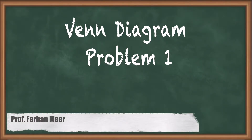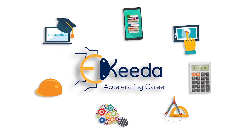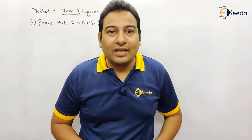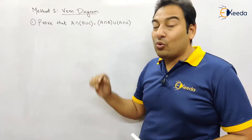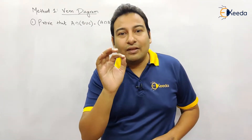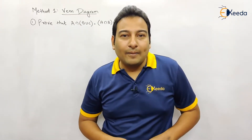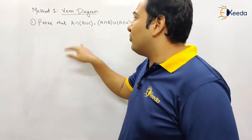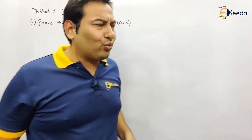Hello friends. In this video, we will be discussing Venn Diagram problem number 1. Now we will be proving this particular problem LHS equal to RHS using the Venn Diagram method. There are actually two methods; there is one more method that we will discuss later on. In this video, we will be discussing this problem by using Venn Diagram. This is a very popular method that we have learnt. So let's do it quickly.